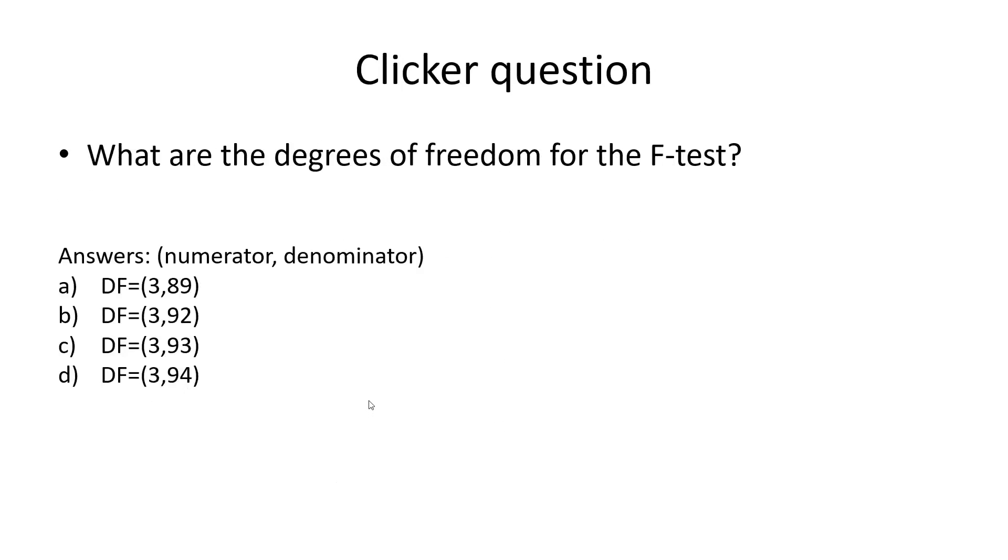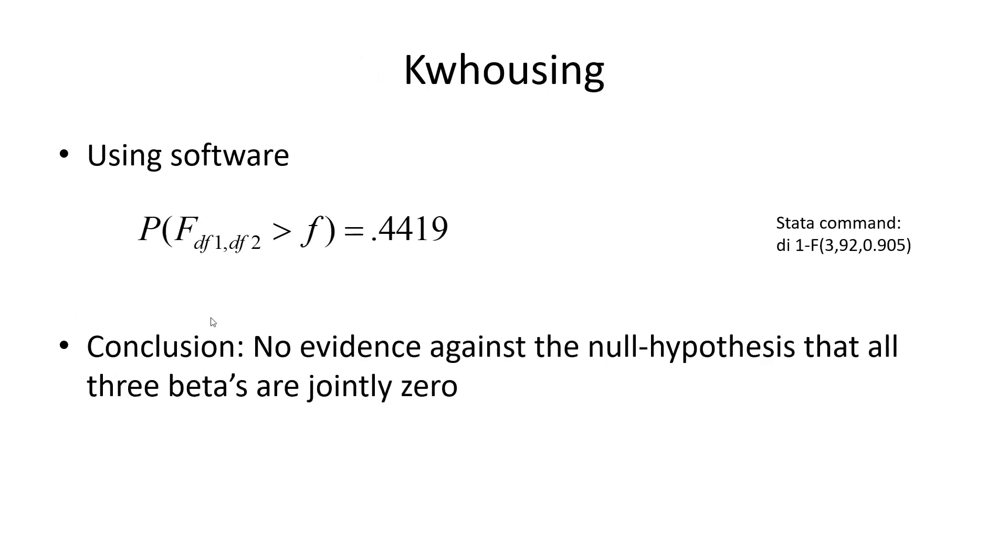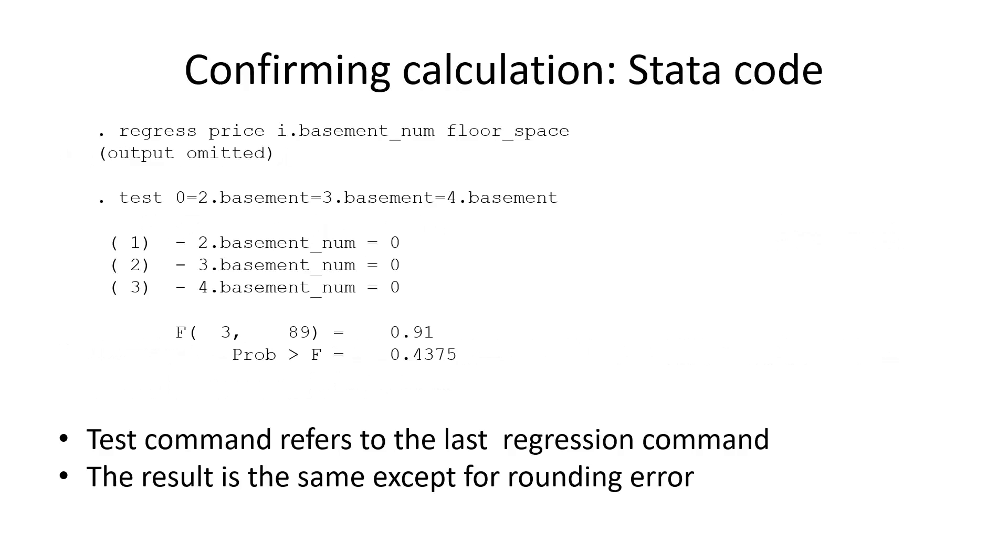Moving on. The probability of exceeding the value 0.9—so less than one even—is quite large: 0.44, or 44%. We don't have any reason to reject the null hypothesis. Therefore, we conclude that we can set all three of these coefficients to zero, and the simpler model does just as well.